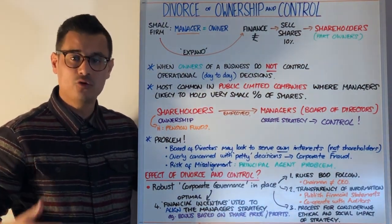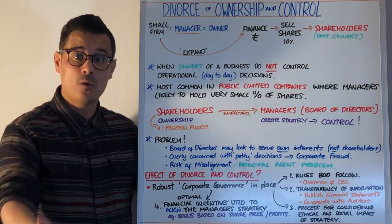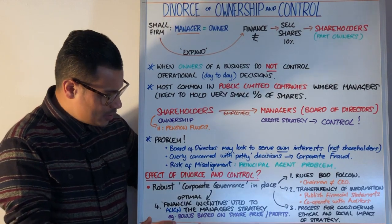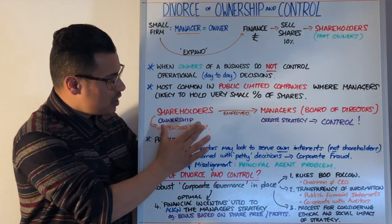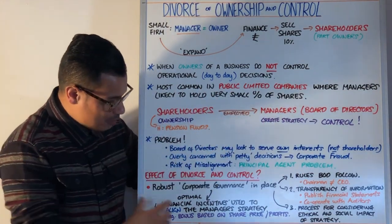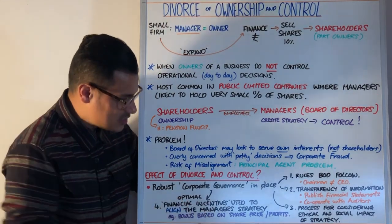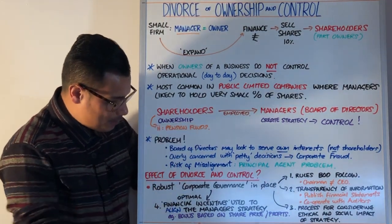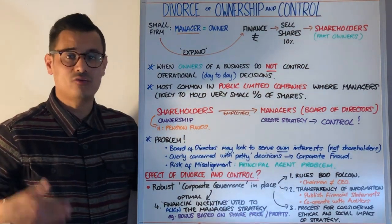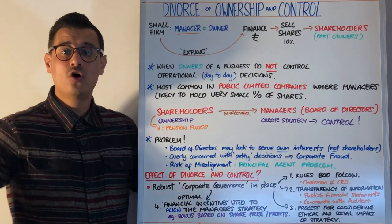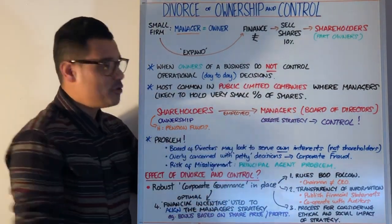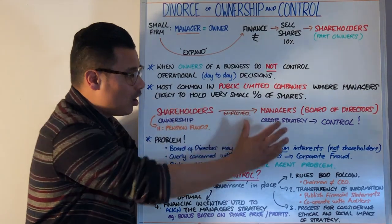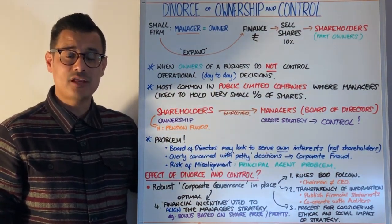There must also be a process for considering social and ethical practices and their impacts on all stakeholders. Perhaps the biggest solution is eliminating the misalignment between shareholders who have ownership and managers who have control, through optimal financial incentives. Shareholders might offer managers a bonus based on the share price at the end of the year, or on profit performance over a series of years. By doing that, managers receive financial incentives when they meet shareholders' needs, which helps align the interests of both parties.